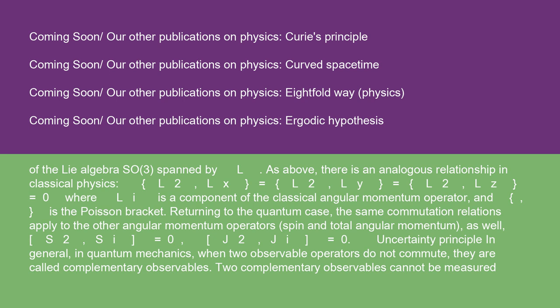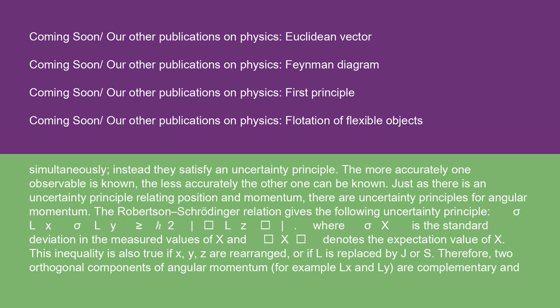Uncertainty principle: in quantum mechanics, when two observable operators do not commute, they are called complementary observables. Two complementary observables cannot be measured simultaneously; instead they satisfy an uncertainty principle. The more accurately one observable is known, the less accurately the other can be known. Just as there is an uncertainty principle relating position and momentum, there are uncertainty principles for angular momentum. The Robertson-Schrödinger relation gives: σ_Lx · σ_Ly ≥ ½|⟨Lz⟩|, where σ_x is the standard deviation in measured values of x and ⟨x⟩ denotes the expectation value of x. This inequality also holds if x, y, z are rearranged, or if L is replaced by J or S.